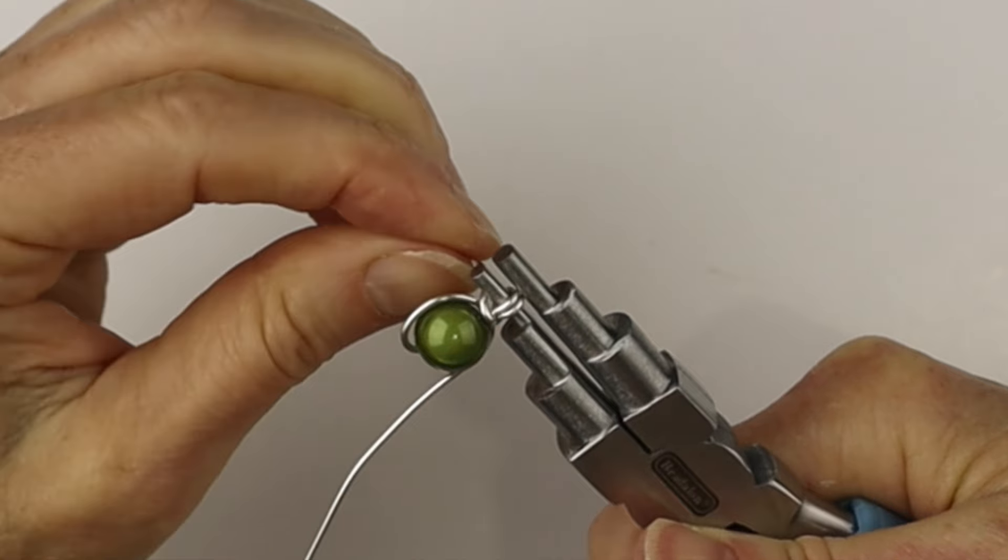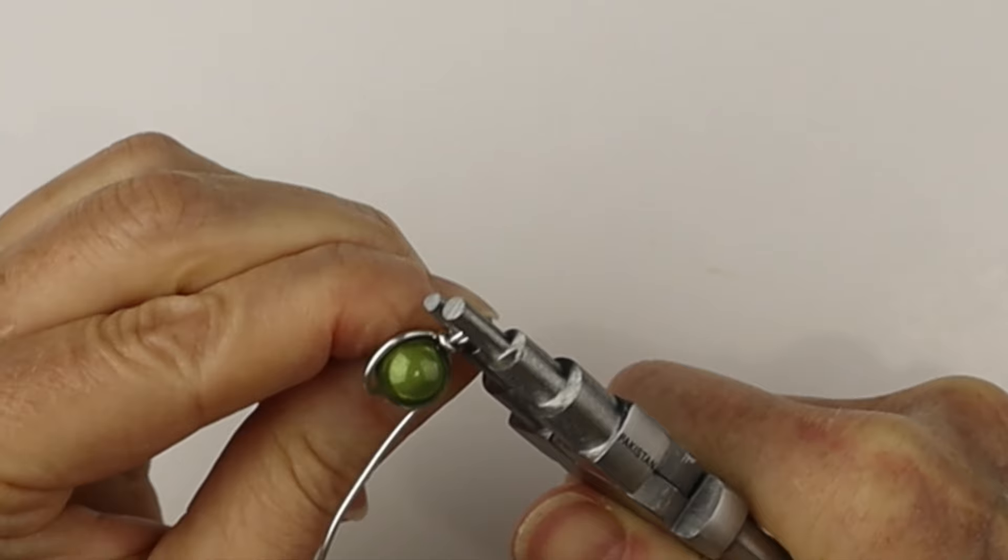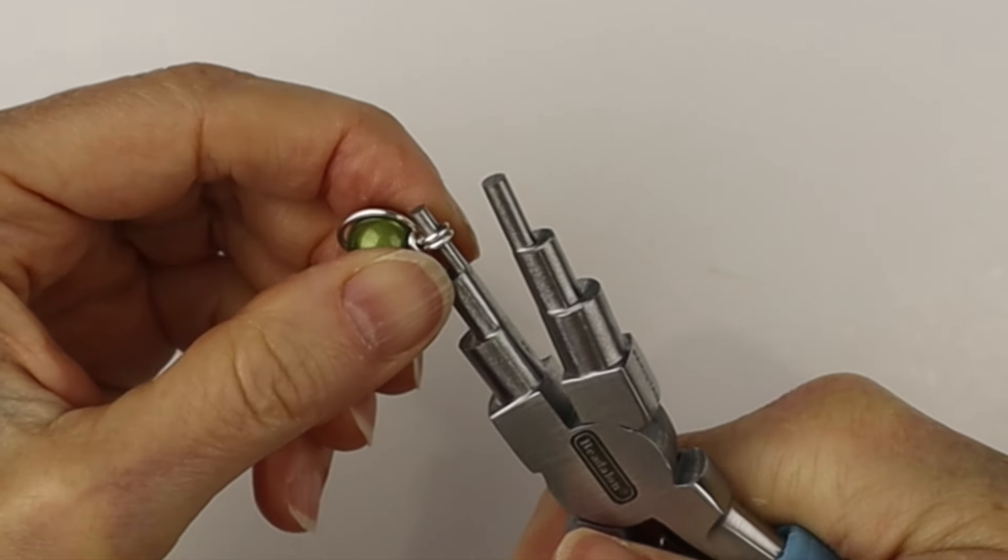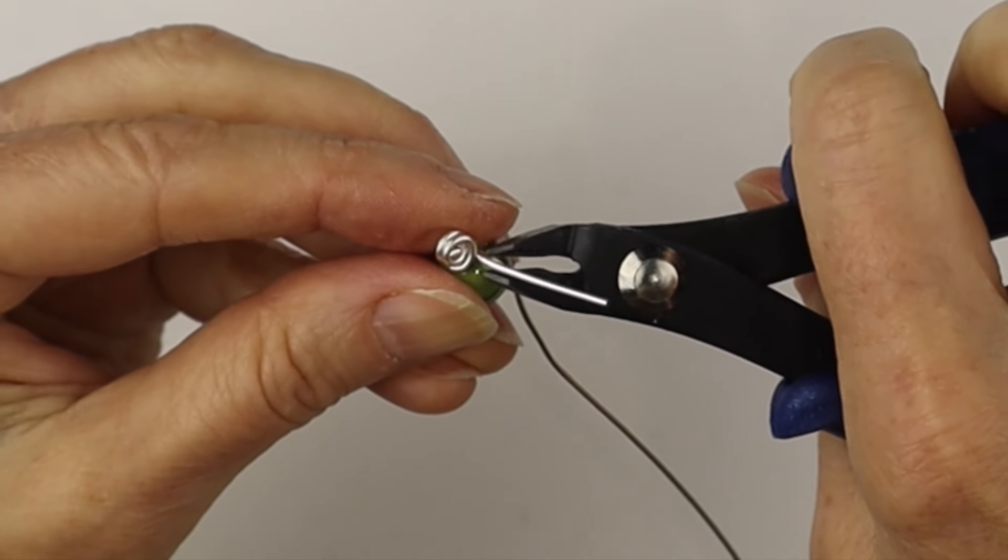Now hold the loop with your bail making pliers and bring the end around to secure it in place. Just keep pushing it until it's in the right place.